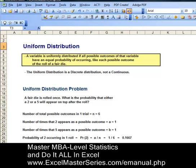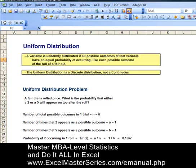A variable is uniformly distributed if all possible outcomes of that variable have an equal probability of occurring, like each possible outcome of the roll of a fair die. The uniform distribution is a discrete distribution, not continuous.